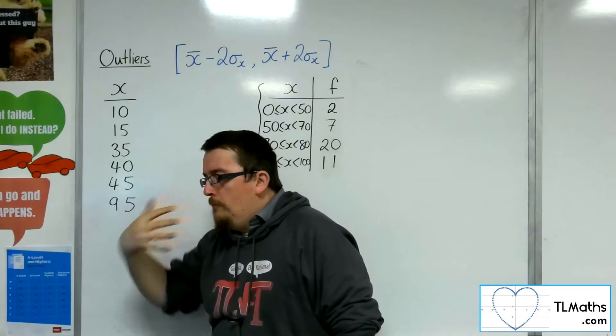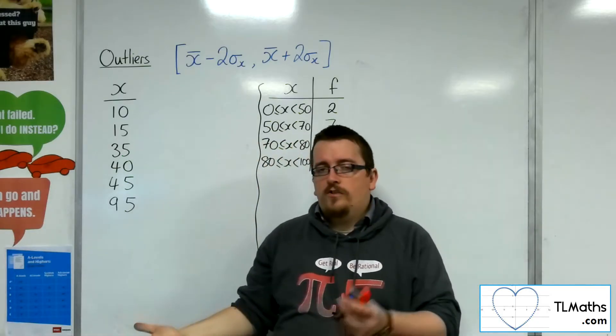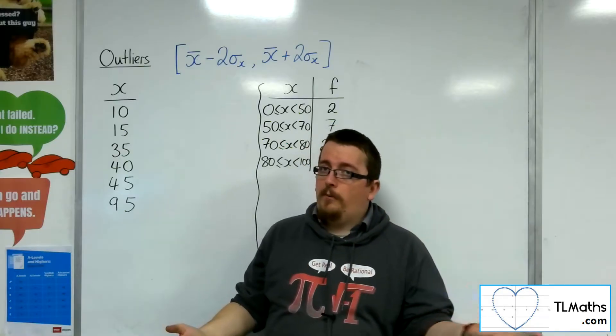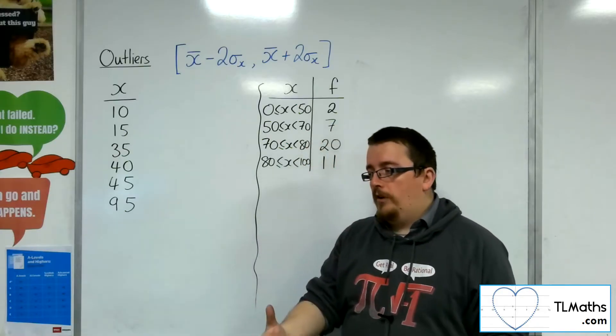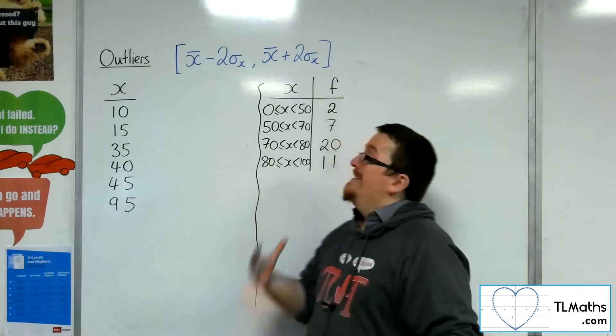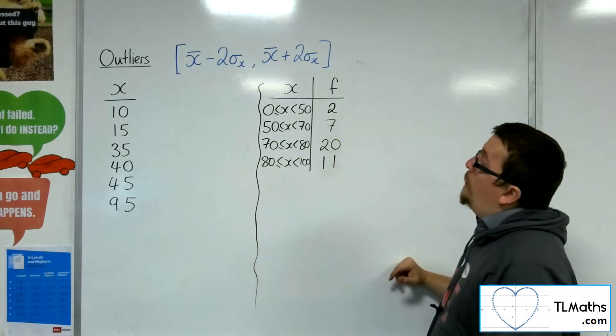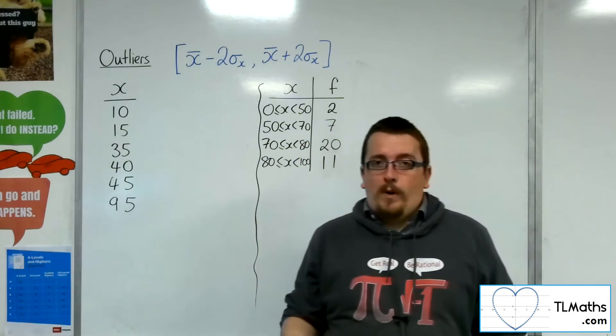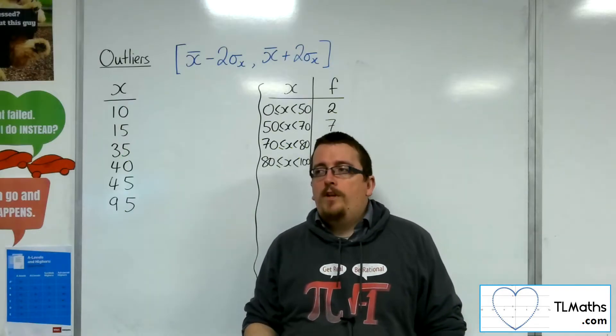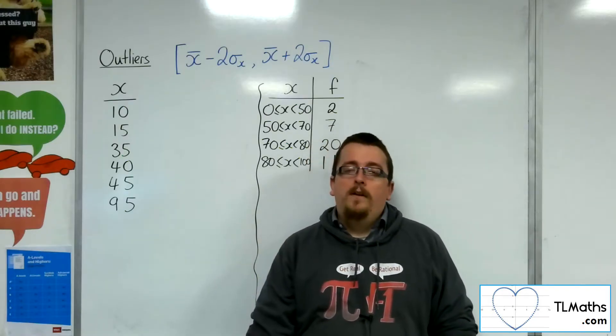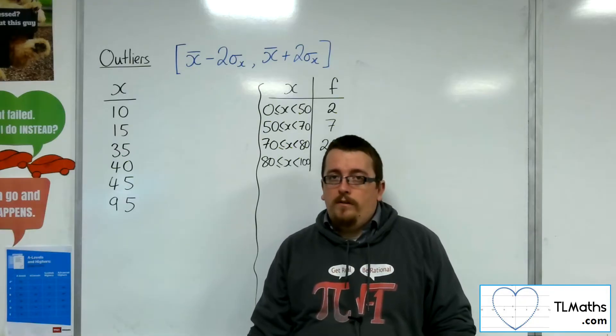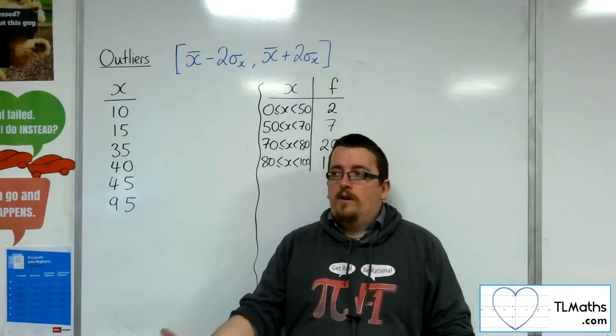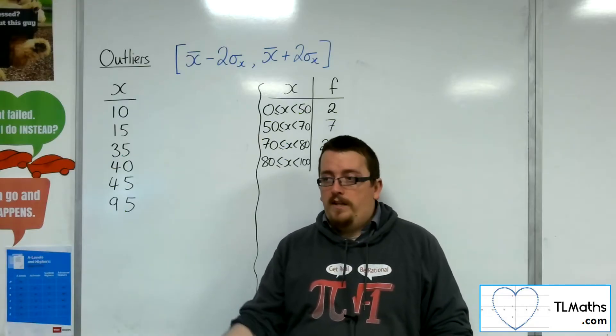You might be wondering, in which case should I use which? Because we've had the lower quartile take away 1.5 times the interquartile range and upper quartile plus 1.5 times the interquartile range from the previous video. Now we've got a second way of doing it. How can I tell when to use which? It's really down to the question. If you've been asked to find the mean and standard deviation previously, or you've been given that, and then you're asked to determine if there are any outliers, then use that.